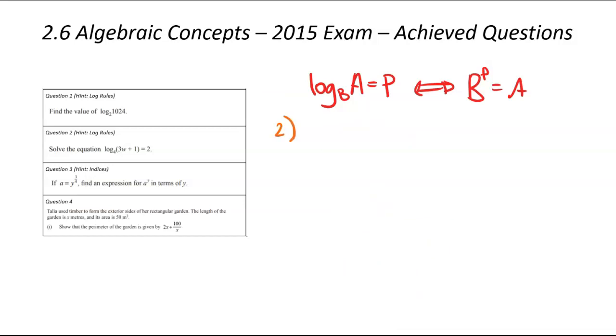We're now on to question number 2. And you can see it's a similar type of log question. And we have an unknown in there. We're going to be using the same switching type formula from log form to index form, like we did in question number 1. So firstly, let's write down our equation. So log with a base of 4, 3w plus 1, when is that equal to 2?